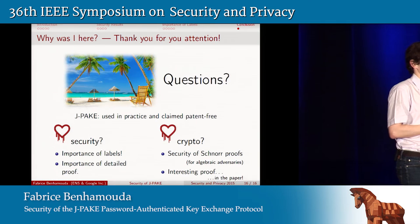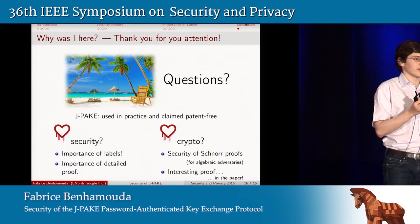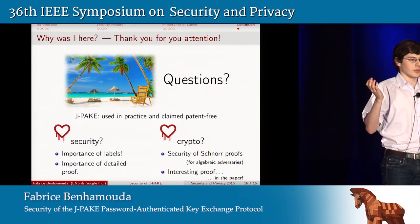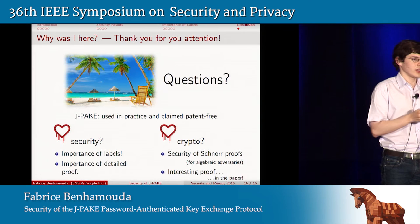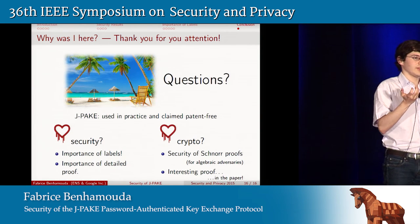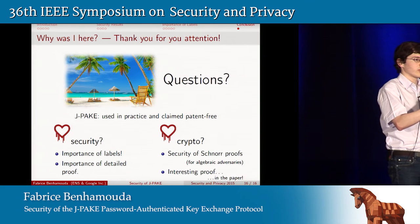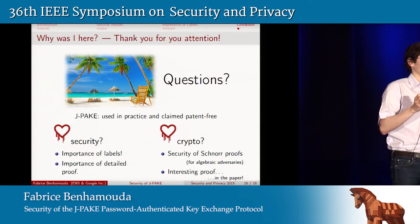We have time for one or two questions. — Can you say exactly what algebraic adversaries are? — Algebraic adversaries are basically adversaries who can do whatever they want, except on group elements. When it comes to group elements, the only thing they can do is group multiplication or group division. They cannot do fancy things such as looking at the second bit of a group element and basing their decision on that.